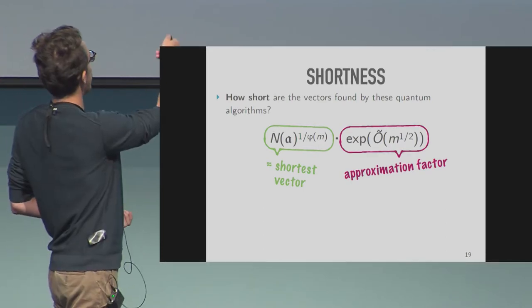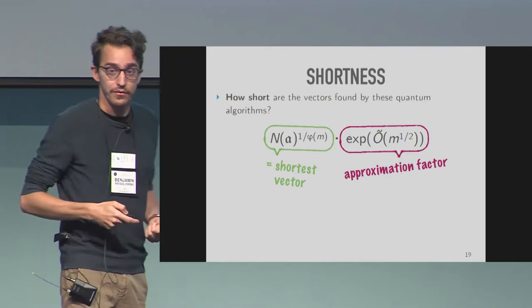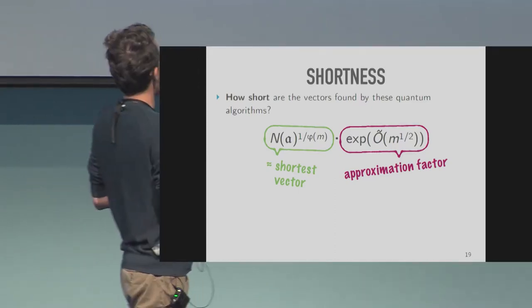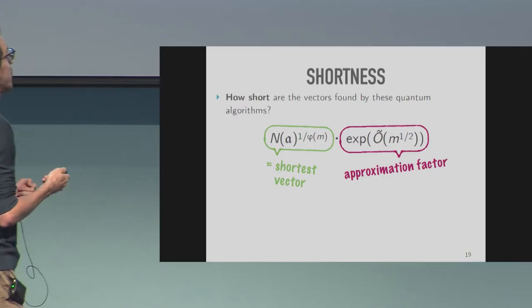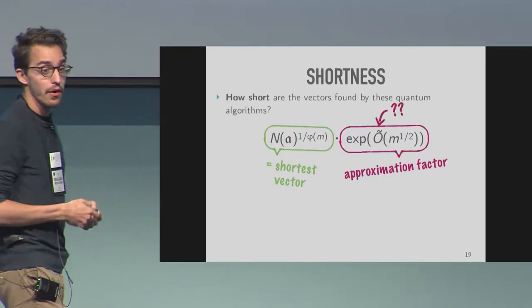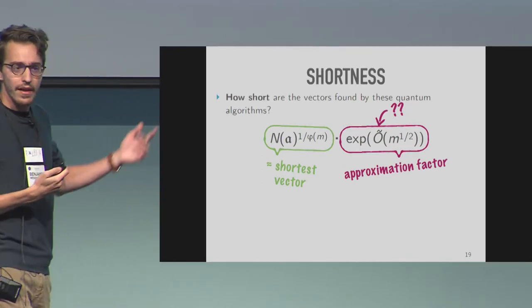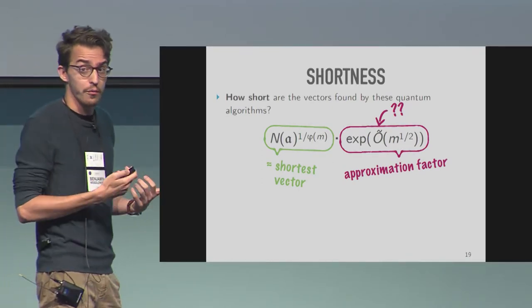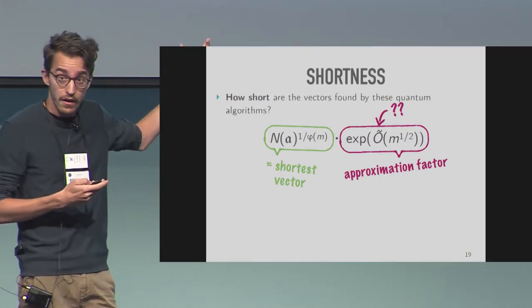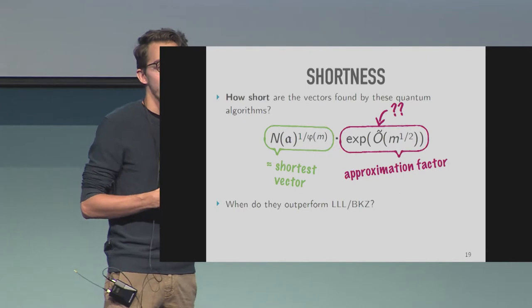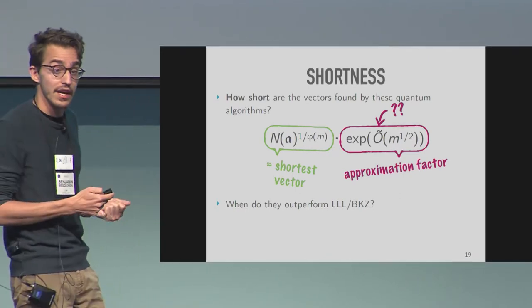How short are the vectors that we find? We find vectors of a certain Euclidean norm where one part is the shortest vector and the other is the approximation factor we're trying to reach. But this is not extremely satisfying because of the big O in the exponent — it has an enormous impact and doesn't tell us much about what's actually happening with concrete parameters. We're trying to understand the hidden constants in there, and to derive from that when these algorithms start outperforming the classical methods LLL and BKZ.